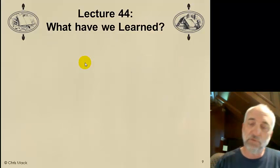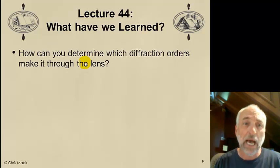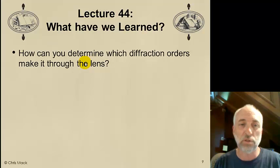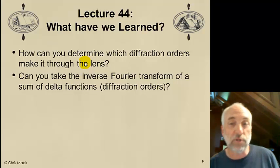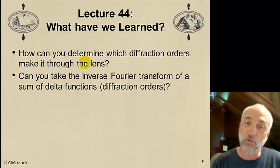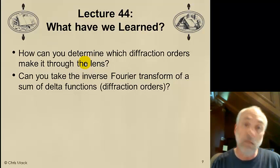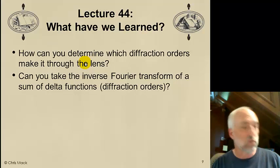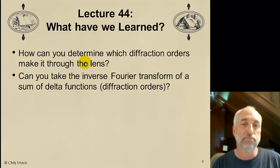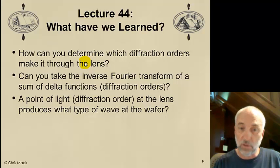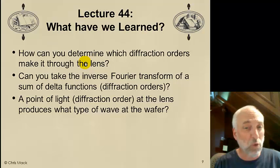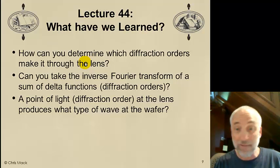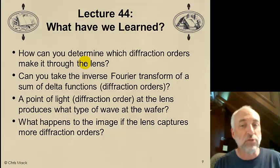All right. What have we learned so far? Let's review. See if you can answer these questions. How can you determine which diffraction orders make it through the lens? Can you take the inverse Fourier transform of a sum of delta functions or diffraction orders? A point of light or a diffraction order at the lens produces what type of wave or wave front at the wafer. And finally, what happens to the image if the lens captures more diffraction orders?